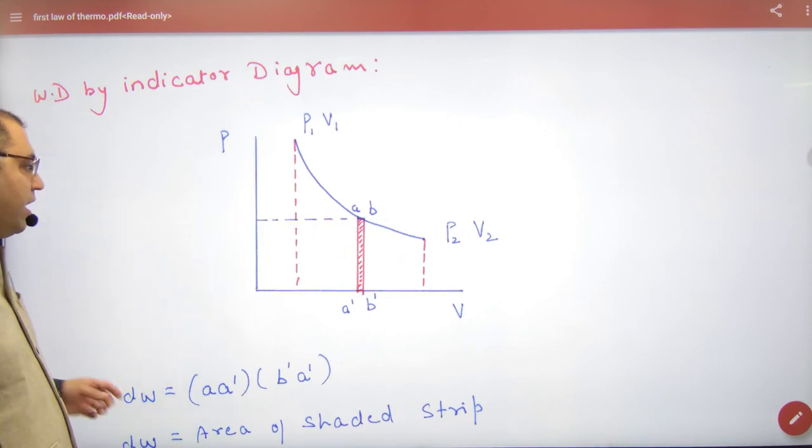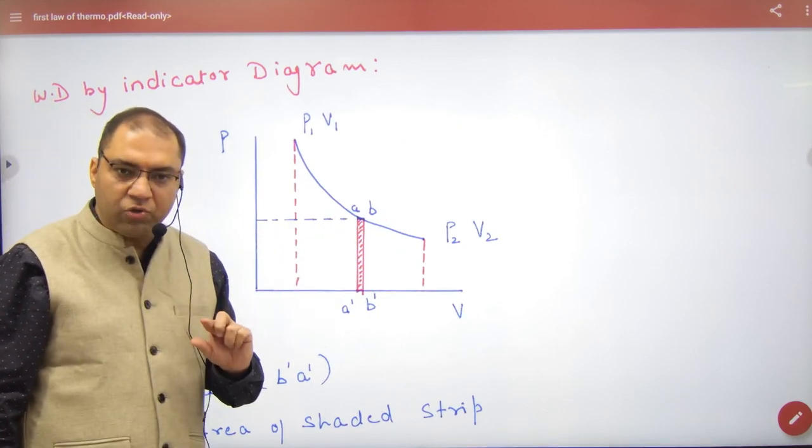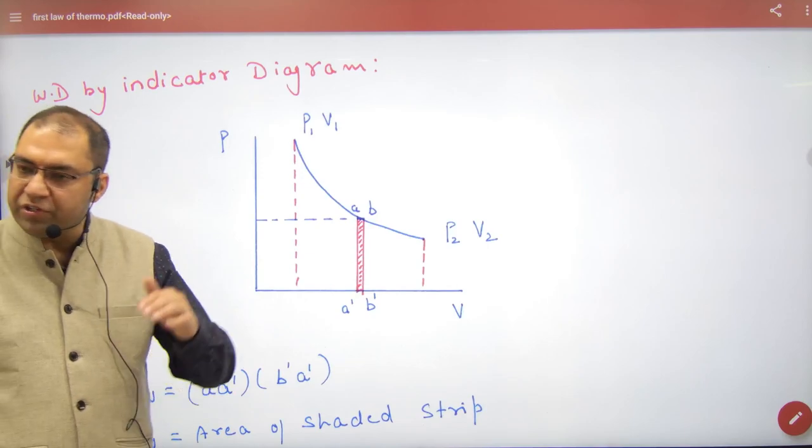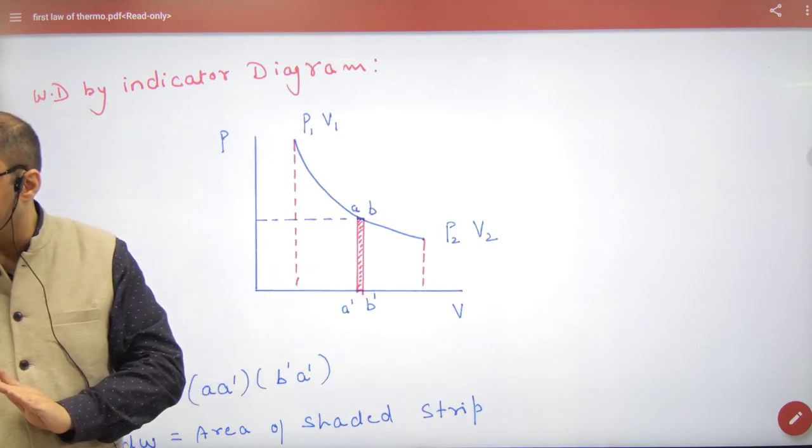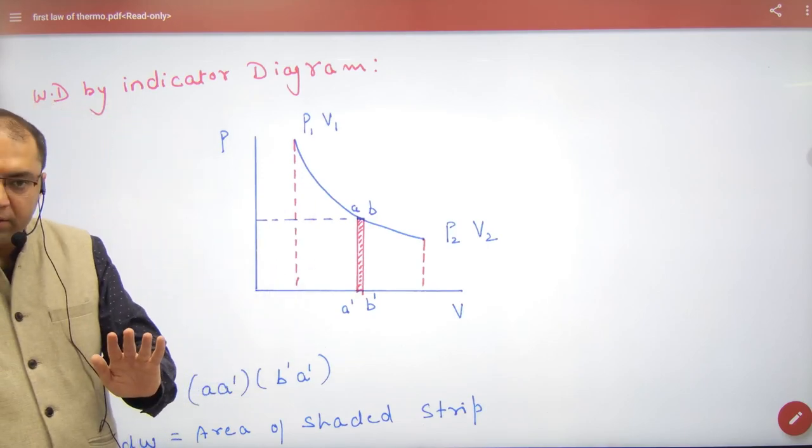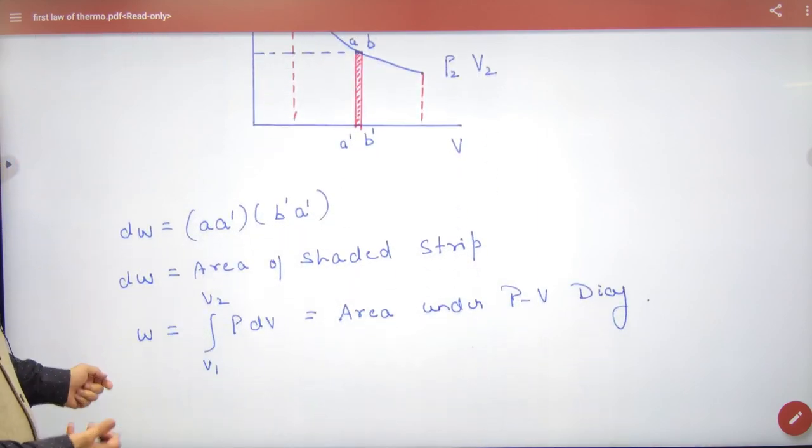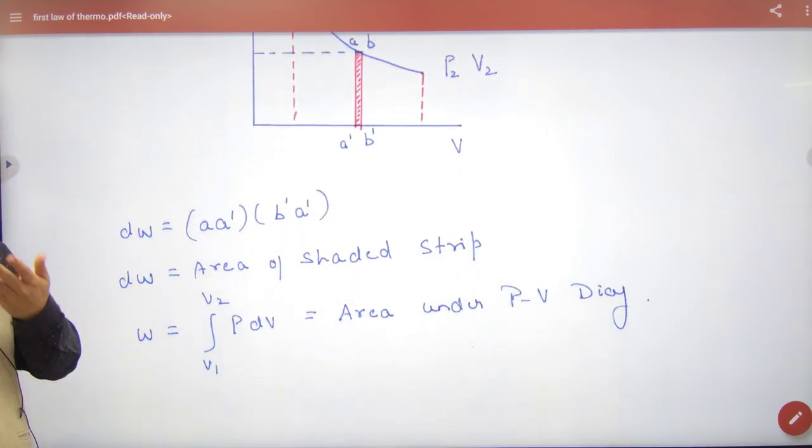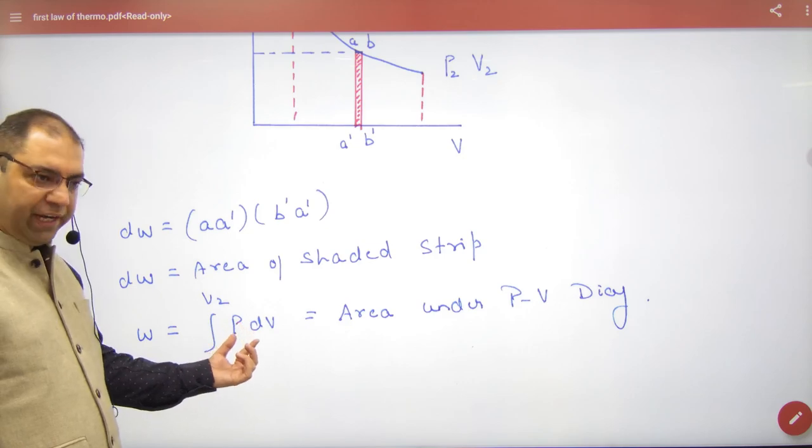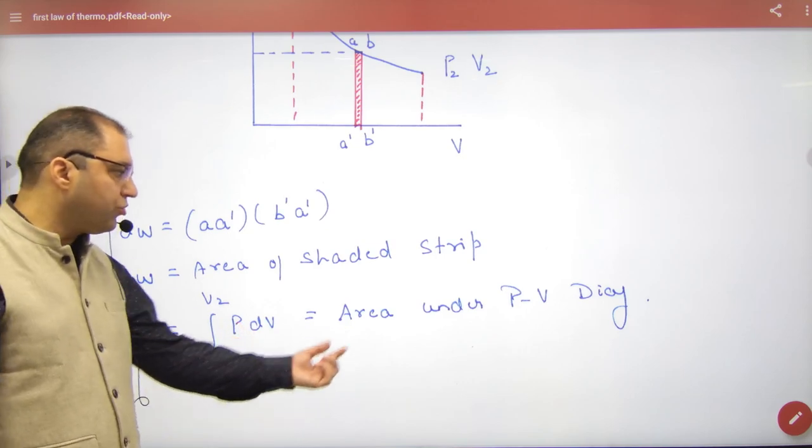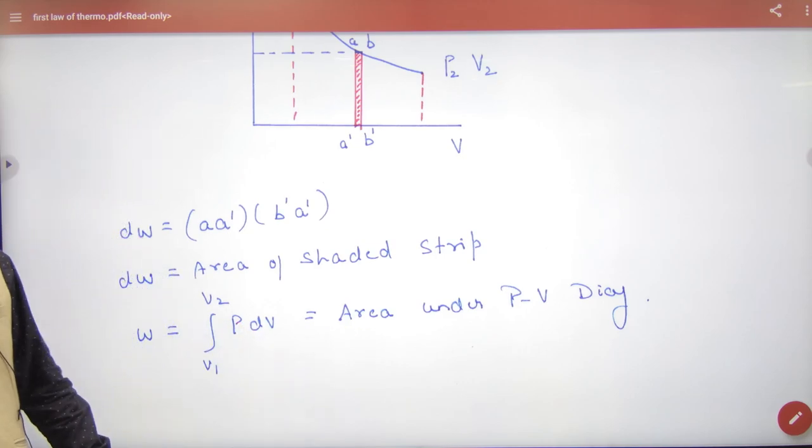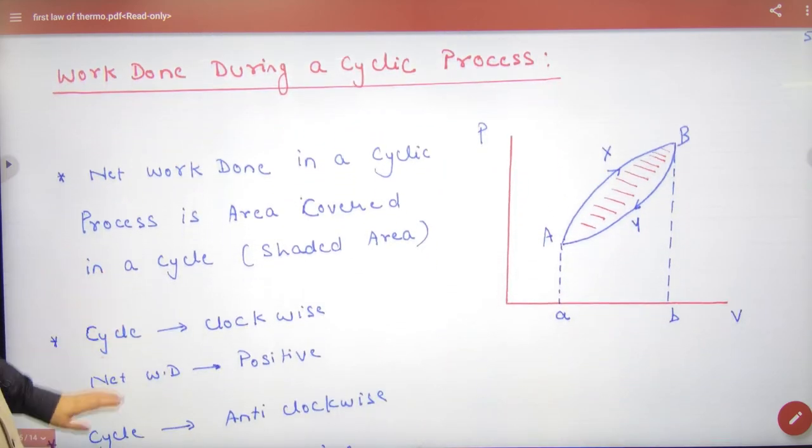So it has small element work done pdv, then total work done area here. So this work done during cyclic process, this work done during cyclic process, this work done.